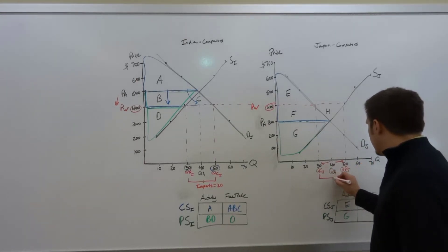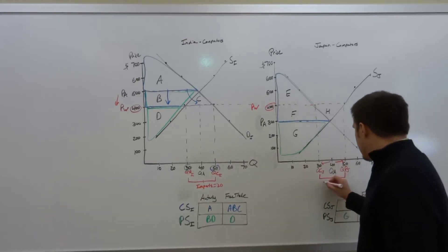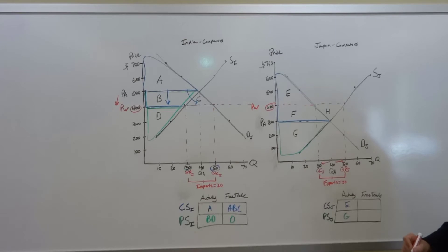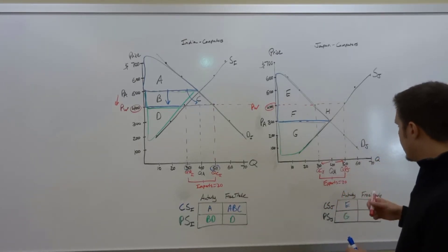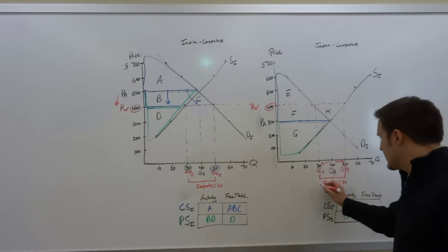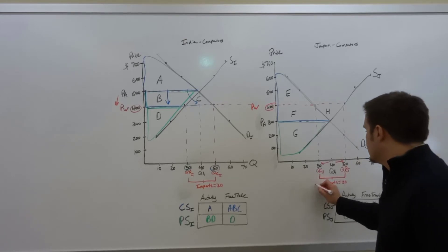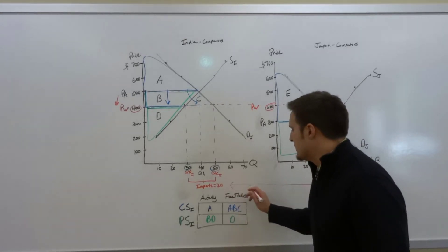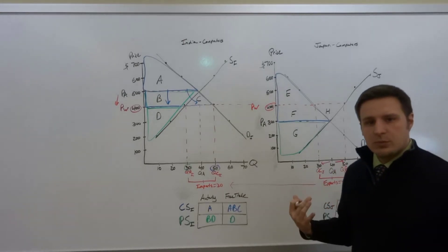So this area is going to represent... So why would you produce more than you consume? It's because you're exporting it. So you're going to export 20 units. Now looking at the rest of the graph, let's say we're taking a lot of liberty, but let's just suppose that these Japanese computers are actually the exports that end up going into India, coming into India as imports.